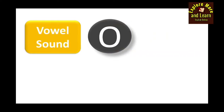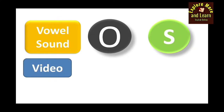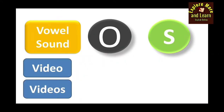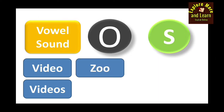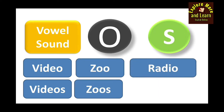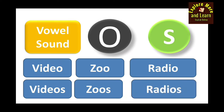When a word ends with the letter O and a vowel sound appears before the letter O, we just add S after the letter O. For example: 'video' → 'videos,' because we have a vowel sound before the O. Similarly, 'zoo' → 'zoos,' and 'radio' → 'radios.' We add S without adding E before the S.